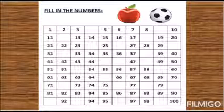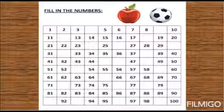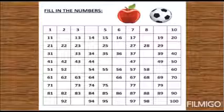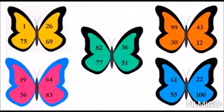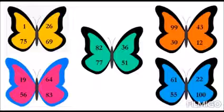Now students, again one exercise for you. Let's look at the picture and read the numbers. Wow, butterflies! First butterfly yellow, read the number: seventeen, five, twenty-six, sixty-nine. Green butterfly: eighty-two, seventy-seven, thirty-six, fifty-one.